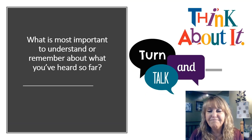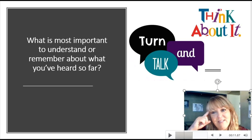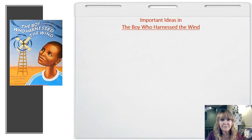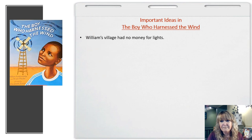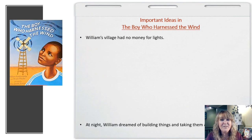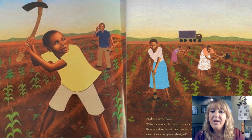We're going to pause right here, spend a moment thinking about this question, and then you'll turn and share with your turn and talk partner: what is most important to understand or remember about what you've heard so far? When we think about this part of the story, you may have said something about William's village having no money for lights. You might have also said that at nighttime, William spent a lot of time dreaming about building things and taking them apart. You may have said something different as well — that's okay. Let's continue reading.